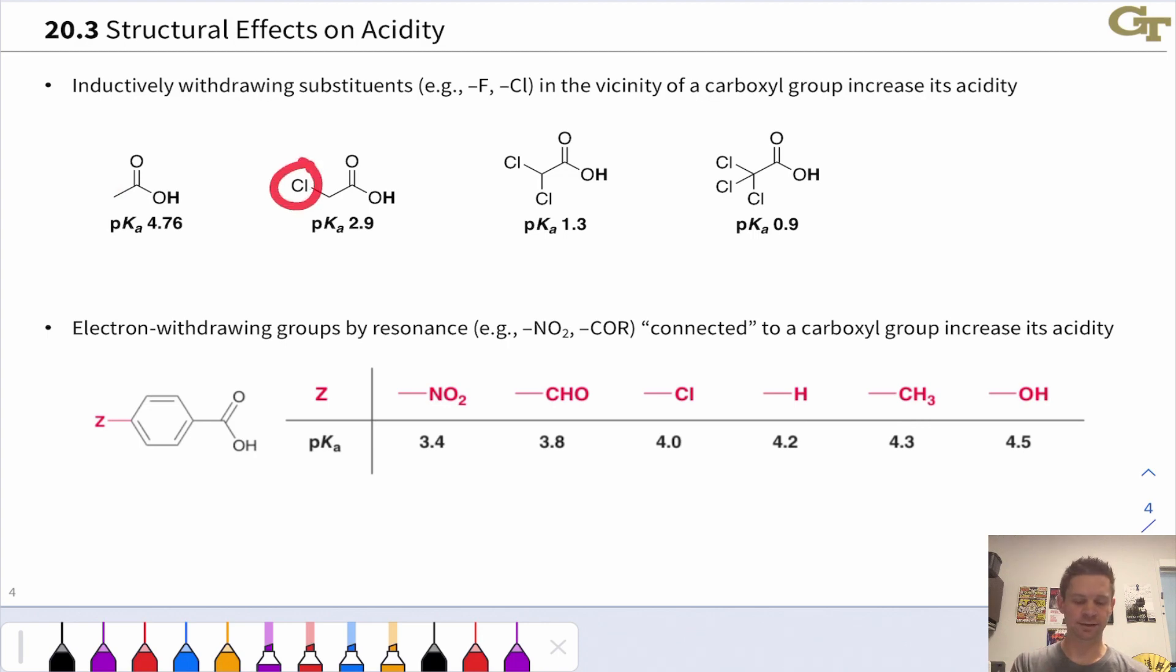Each of these electronegative chlorine atoms stabilizes the negative charge in the conjugate base, the carboxylate, relative to the unsubstituted acetic acid. So acetic acid here is the least acidic. The monochloro is next, dichloro is even more acidic,